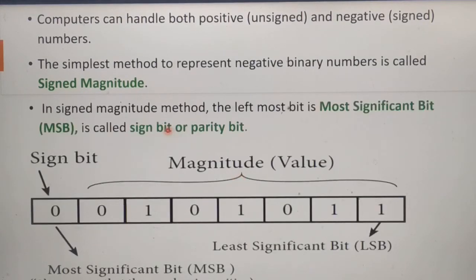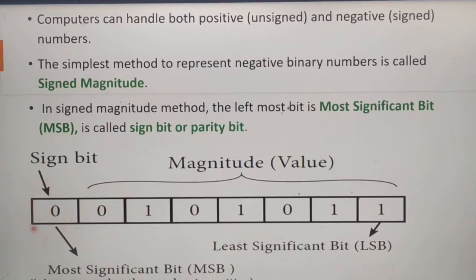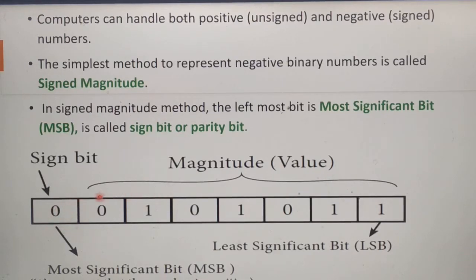In the signed magnitude method, the leftmost bit is the most significant bit, also called the sign bit or parity bit. It is used to represent the sign — whether the number is positive or negative. If it is a positive number, the sign bit is represented by zero. If it is a negative number, the sign bit is represented by one. We have two parts: the sign bit and the magnitude, where magnitude means the binary value. Together these parts form the signed magnitude representation.